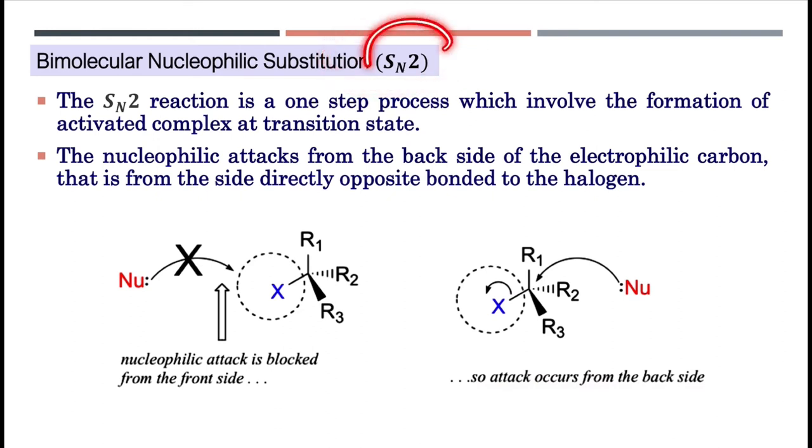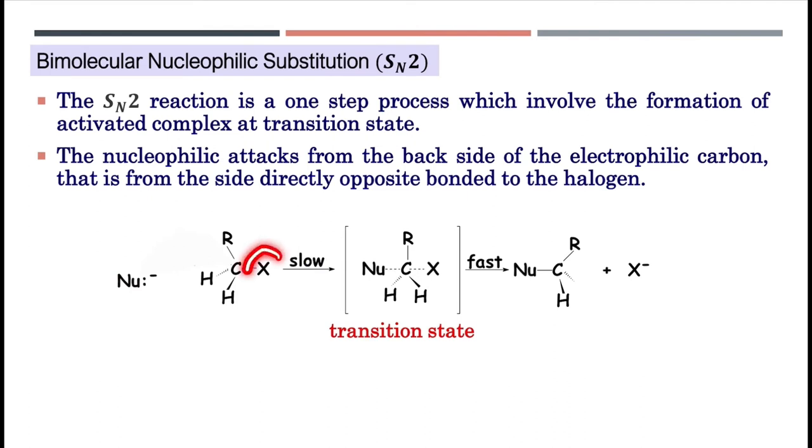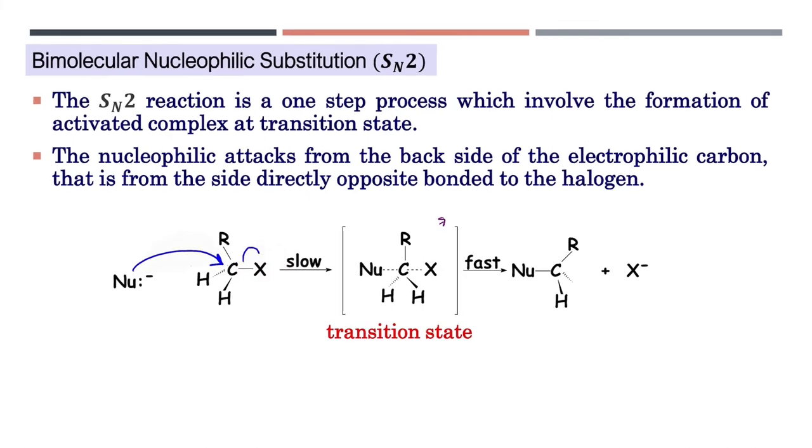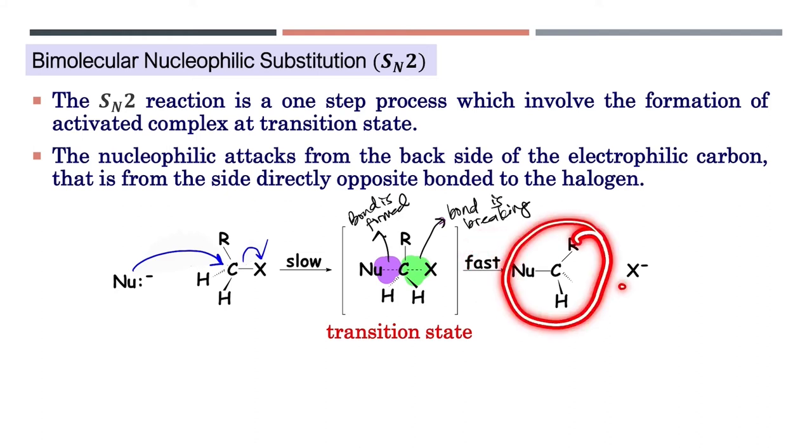The drawing for SN2 reaction must be drawn in 3D. The nucleophile will attack the electrophilic carbon from the back side which is directly opposite to the halogen. This attack will form what we call a transition state, in which during this transition state bond is formed between the nucleophile and the carbon and the bond is breaking between the carbon and the halogen.